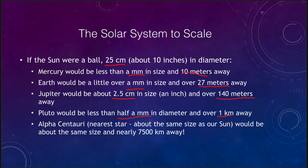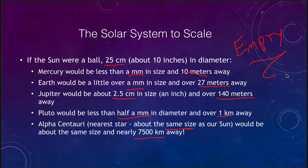On that same scale, Alpha Centauri, the nearest star, is about the same size as our Sun and would be approximately 7,500 kilometers away. This illustrates how empty space really is. Pictures that show the Sun and planets close together are not realistic representations of what the solar system is actually like.